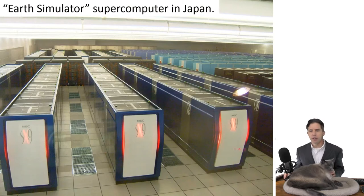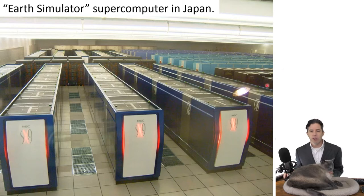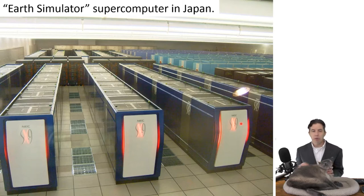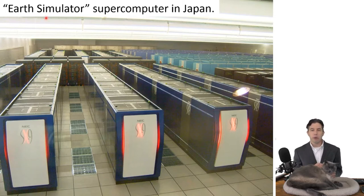The biggest, fastest computers in the world look something like this. This one was for a while the fastest computer in the world — it's called the Earth Simulator — and all it did was run what we call climate models.